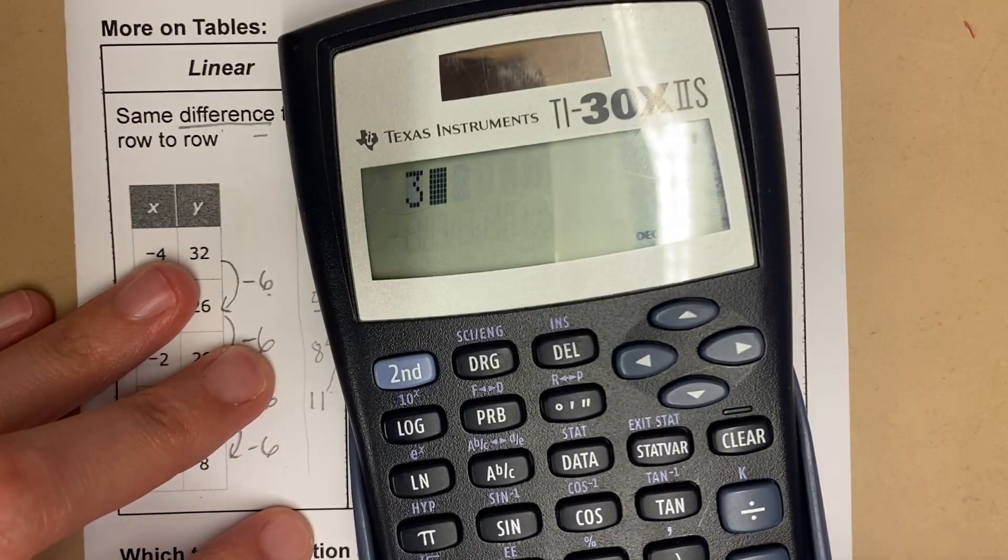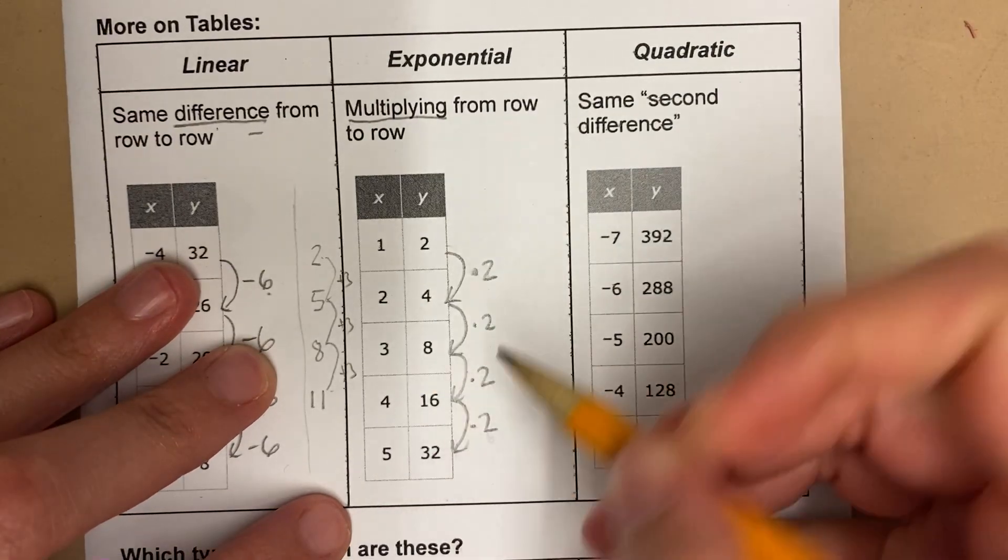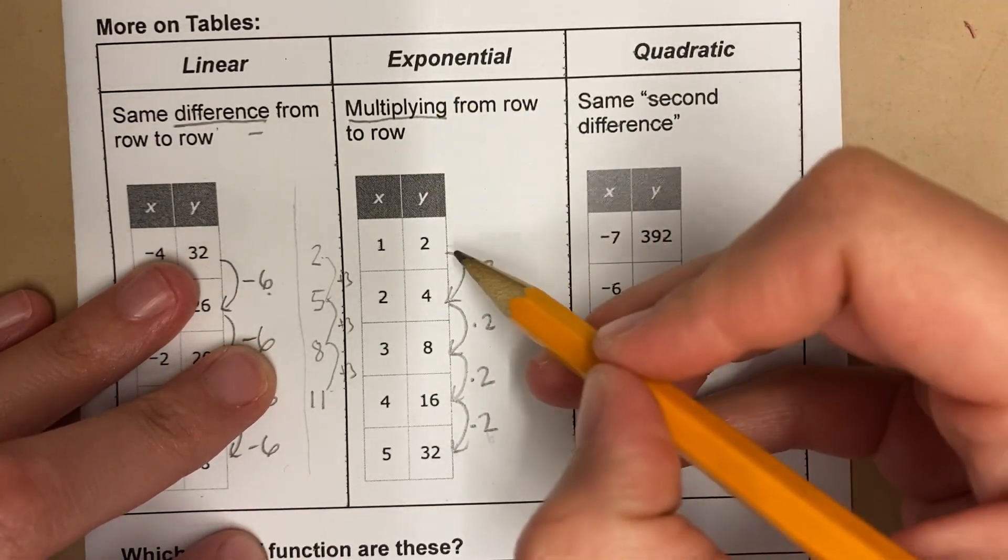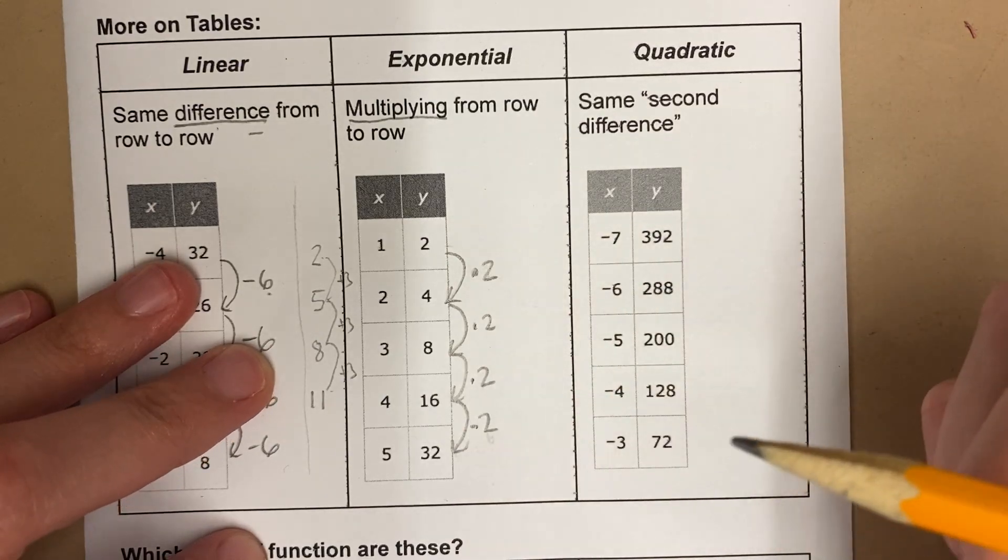If I was like, what's the pattern? I could do 32 divided by 16. It's 2. This is multiplying by 2. So in exponential, we're multiplying from row to row. This is times 2, times 2, times 2.